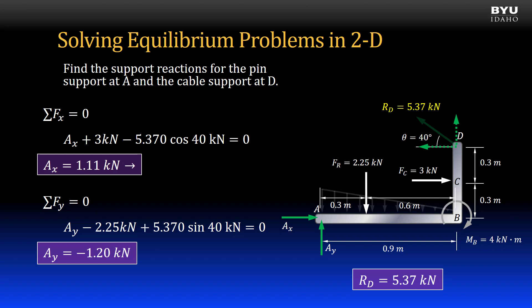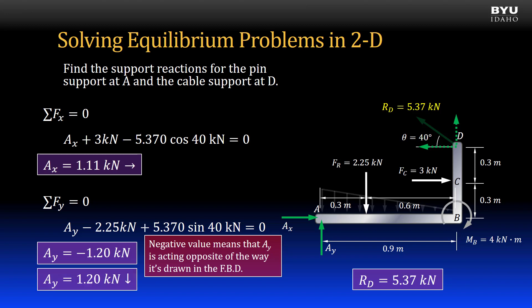Solving for Ay, I get negative 1.20 kN. The negative value on Ay means that it is acting in the direction opposite of the way it is drawn in the free body diagram. So Ay is pointing downward.